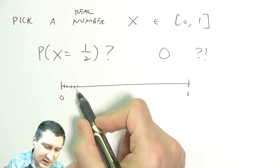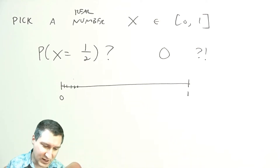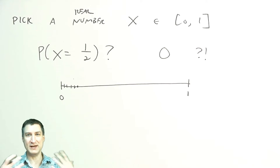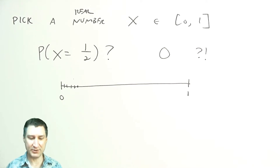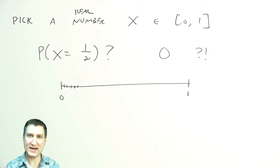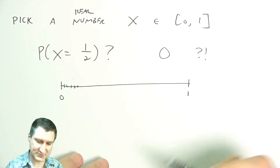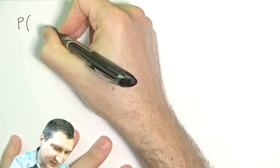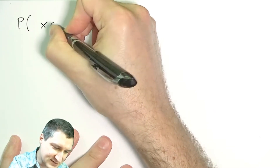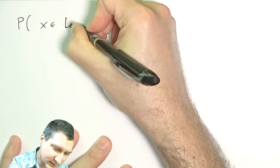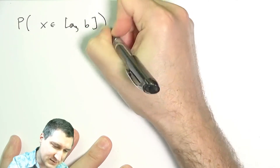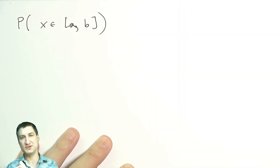No matter how small, if I assigned some nonzero probability to each possible number I would immediately get a lot more than one total probability. So instead of assigning probabilities to exact outcomes, we have to assign probabilities to ranges of outcomes. It makes more sense in the continuous world to ask: what's the probability that X is in some range between A and B? That's something we can get a nonzero probability for.